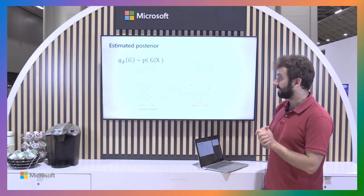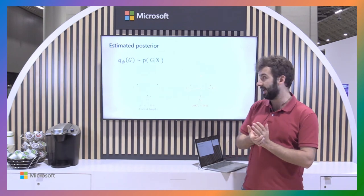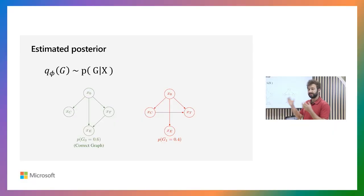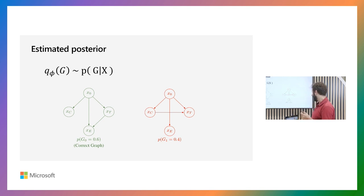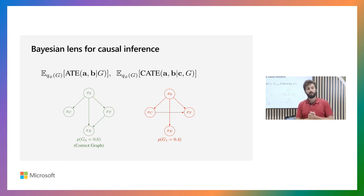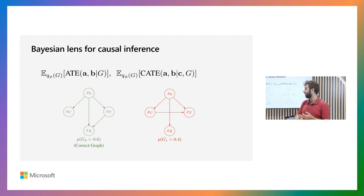By estimating a posterior over graphs, we learn a distribution rather than committing to a single DAG, because in the limited data case we cannot necessarily distinguish all possible DAGs. For example, we might assign 60% probability to one DAG and only 40% to a wrong DAG. We then perform Bayesian model averaging over the different DAGs in our posterior, giving us an expected value for our ATE and our CATE.